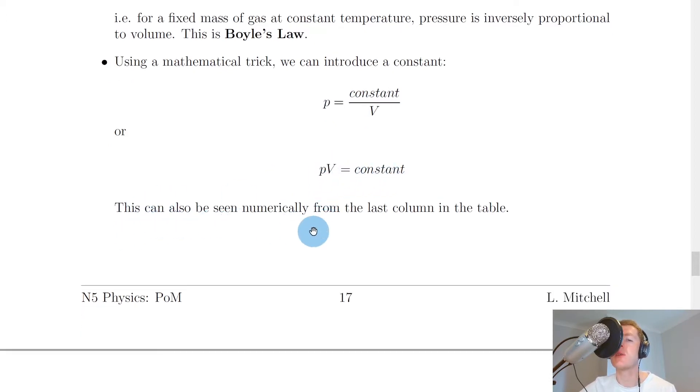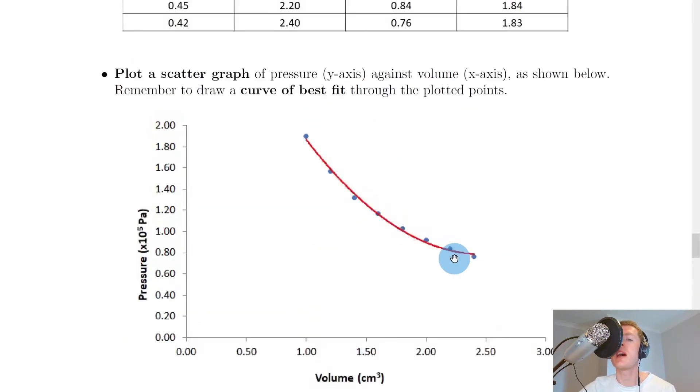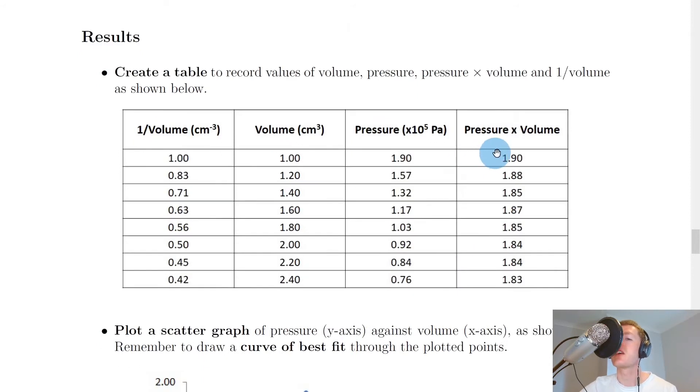This can also be seen numerically from the last column in the table. Remembering back to the video on Boyle's Law experiment, this is the last column that we haven't looked at yet. If you look back at our table and include a column of pressure times volume, the numbers come out roughly constant, ranging from about 1.8 to about 1.9. It's not perfectly constant because in an experiment this isn't going to happen. But because it's such a small range we could say these numbers are roughly constant, proving that pressure times volume gives us a roughly constant number.